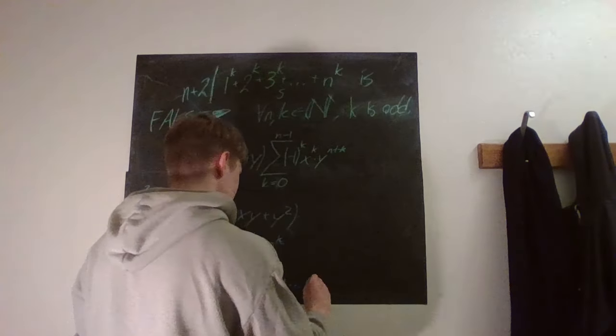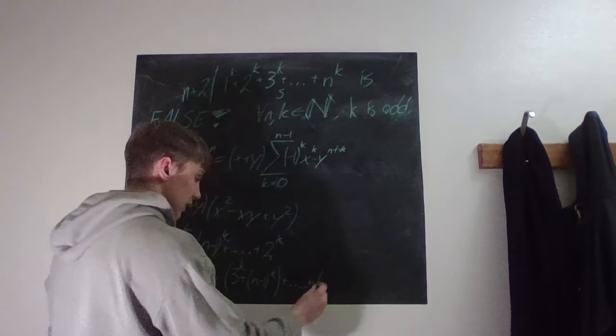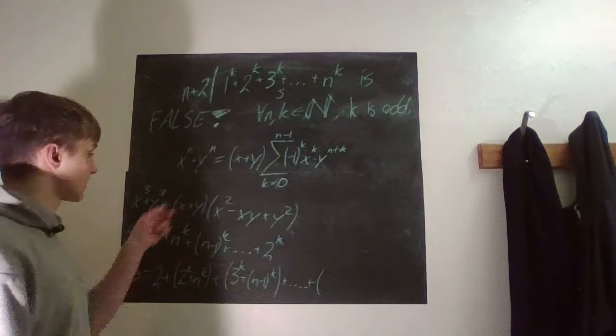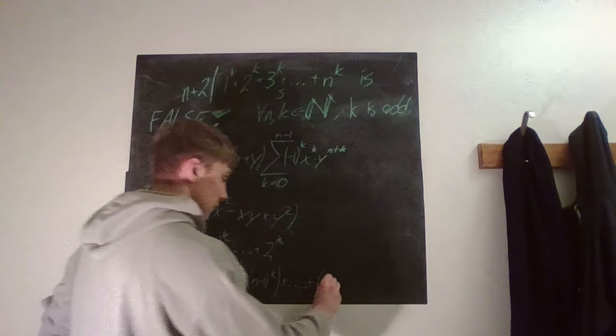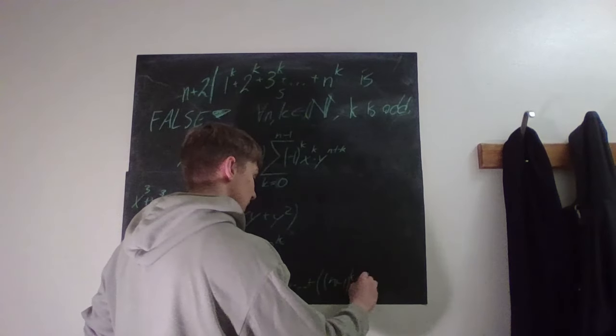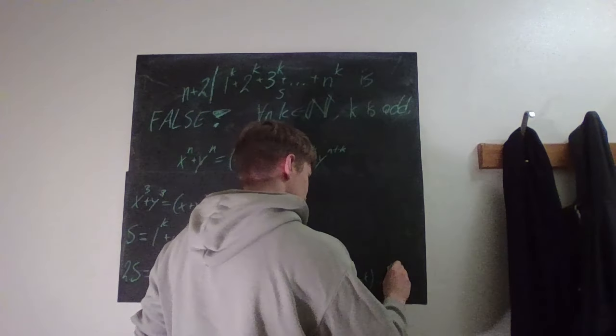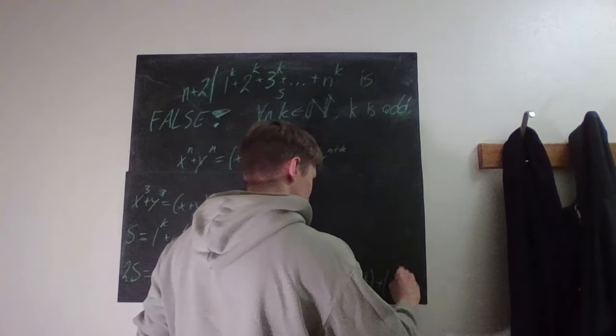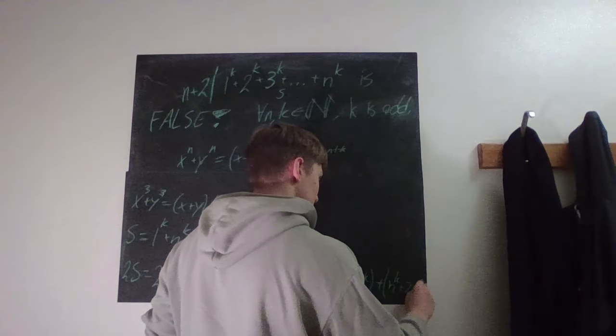And so on, all the way that the orders get flipped basically because the start of this is the same as the end of that. So then we'll just get, eventually we'll just get n minus 1 to the power of k plus 3 to the power of k plus n to the power of k plus 2 to the power of k.